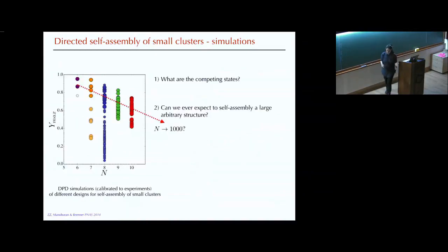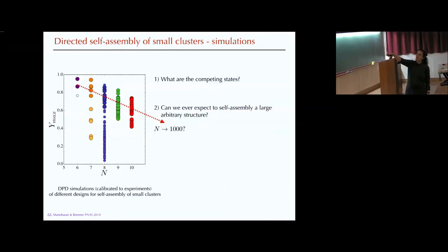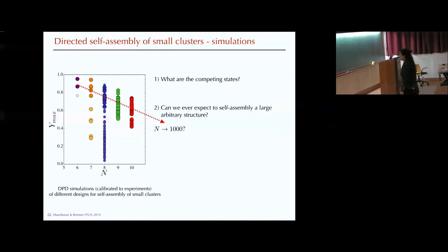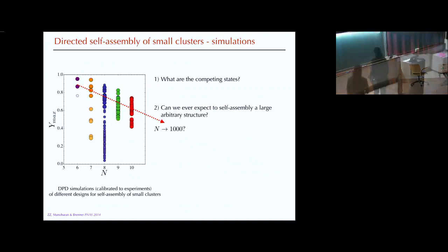We looked at all different structures and all different alphabets. What we wanted to understand is whether there are rules or regularities in this large dataset. Looking at a cumulative plot of maximum yield as a function of system size up to 10 particles, there is a downward trend — yield decreases as system size grows. This raises the question: how could we ever make something like a ribosome with 70 or 80 different building blocks? We need to understand what competing states are killing the yield.